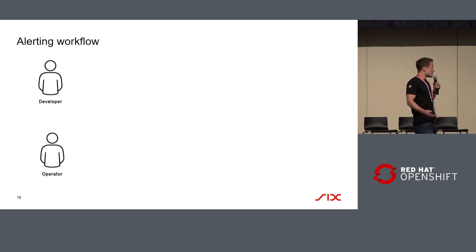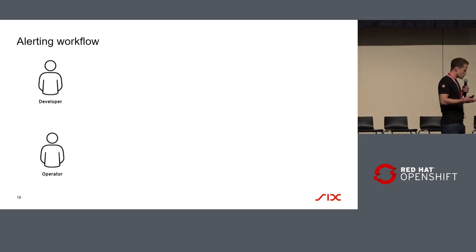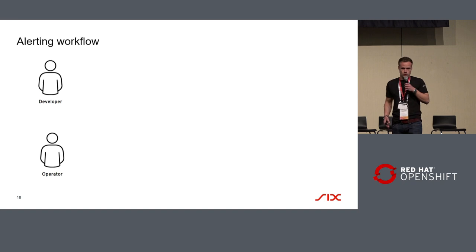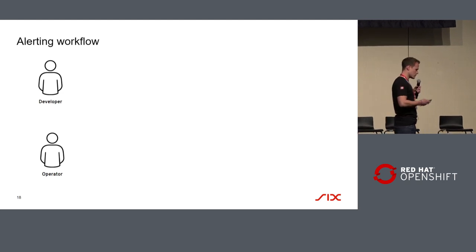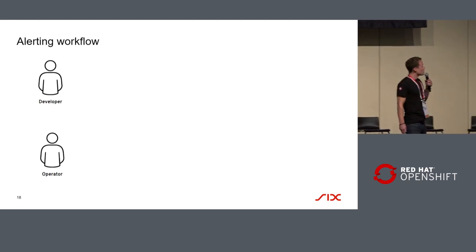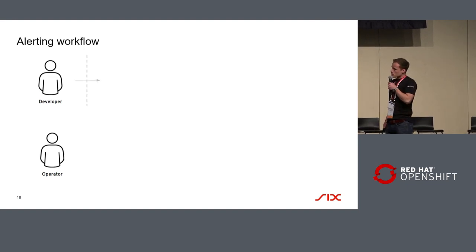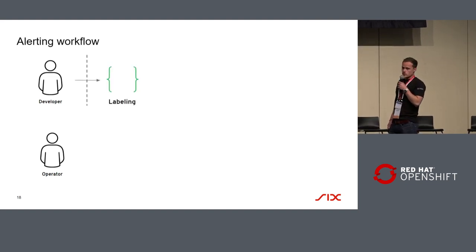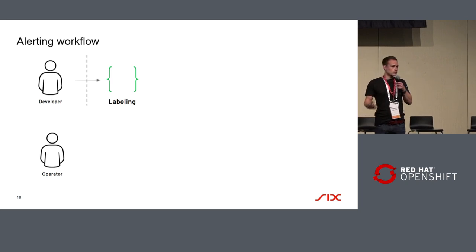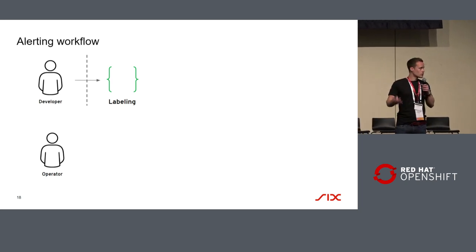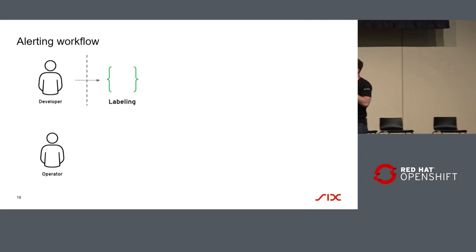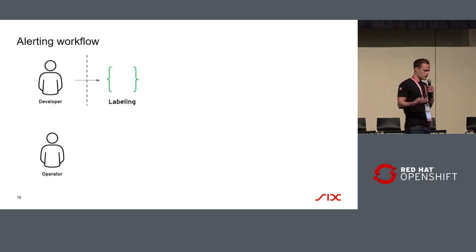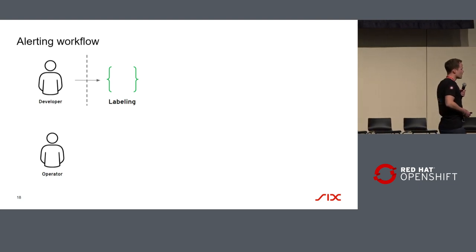The most important thing is: how do we alert? Alert Manager was missing, and in Six we have a strong process for alerting in case of a service impact. Here is a big picture of how we do the alerting workflow now. The developer has the opportunity to label his objects — that can be a pod, a deployment configuration, a persistent volume claim, and so on. He labels his objects to say he wants to enable alerting. The second thing is he can say he wants an on-call, email alerts, or SMS alerts as well.